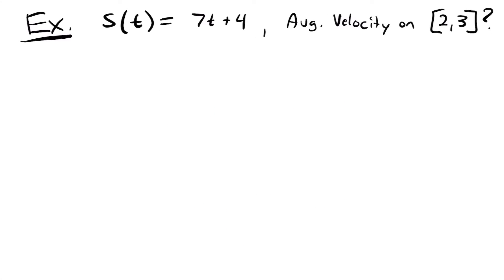Welcome back. We'll start with this example where we have the position function 7t plus 4, and we want to know the average velocity on the time interval from time equals 2 to time equals 3.